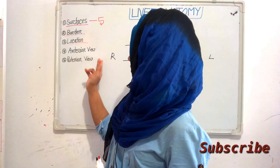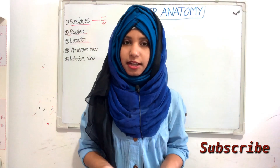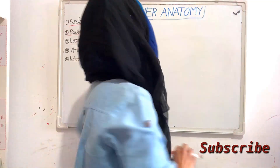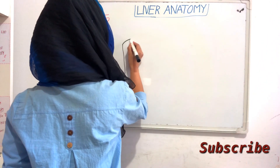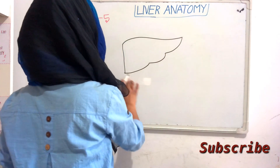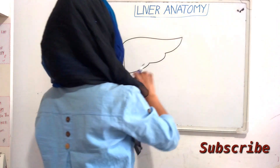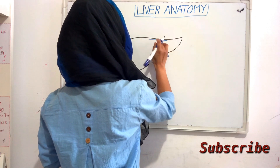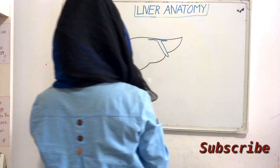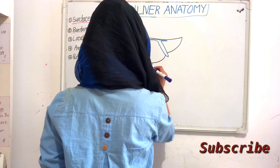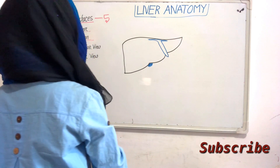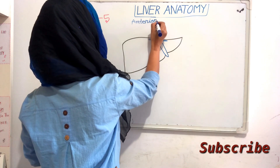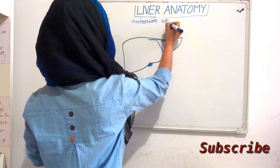Now we will see the anterior view and the posterior view of the liver. First we will see the anterior view — if we see our liver from the front, how it will look. Now I will make a diagram. This is our liver. This is the anterior view of the liver, from the front.